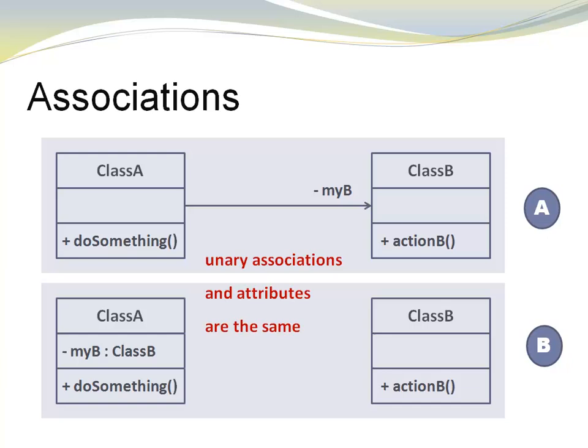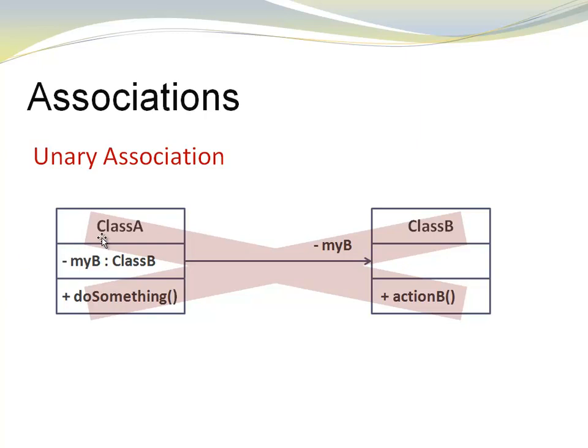Unary associations and attributes, those are the same things. Which version you should use depends on where your emphasis is. If you want to emphasize the relationship of class A to class B, the arrow is a great way to emphasize that. If you just want to have a closer look at class A, entering the information in the attribute area is a good way to go. Sometimes there's a temptation to do both at the same time but that is not a good idea. You would have class A that has two attributes of type class B both called my B. You have to choose between one view or the other.